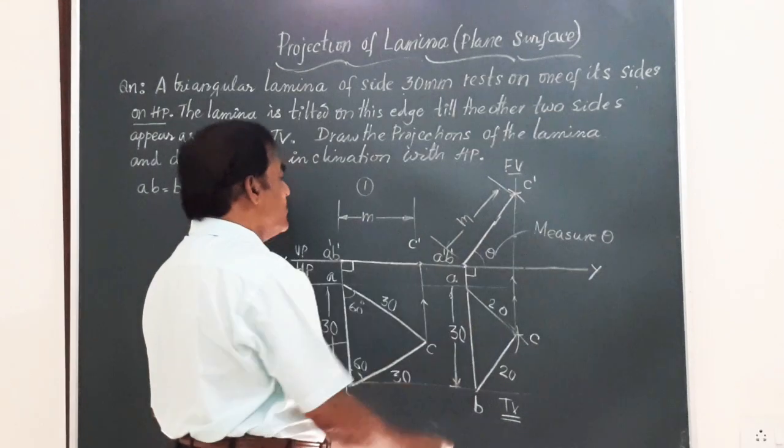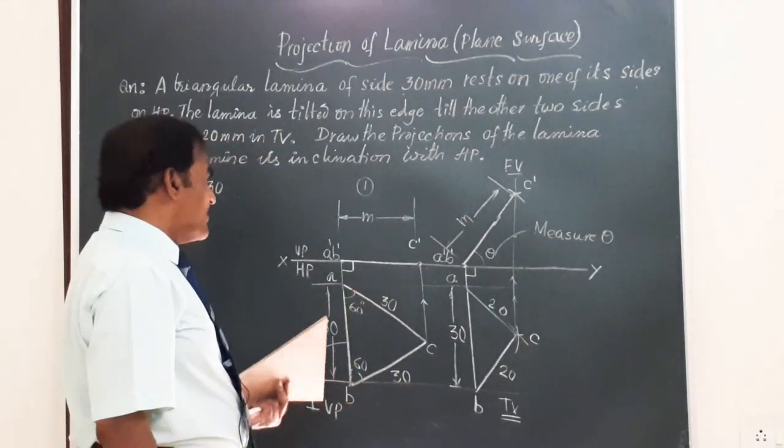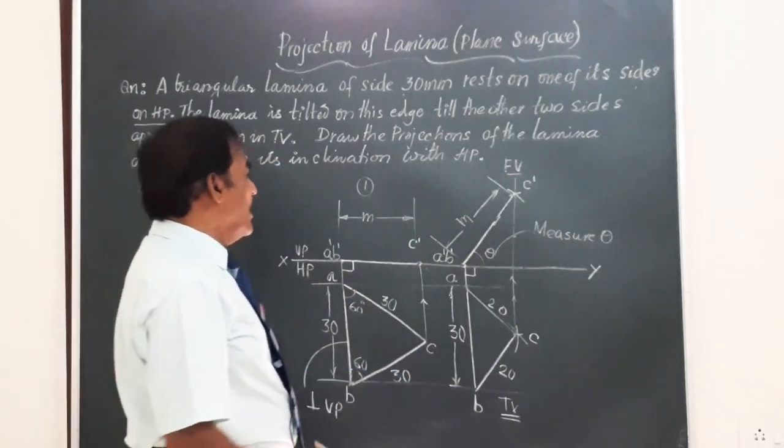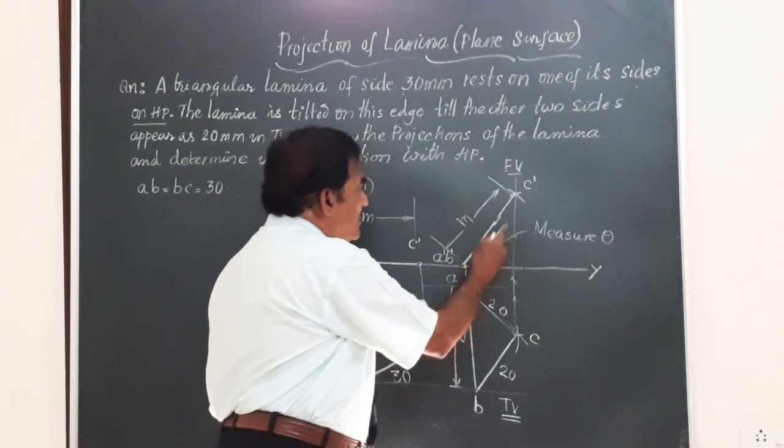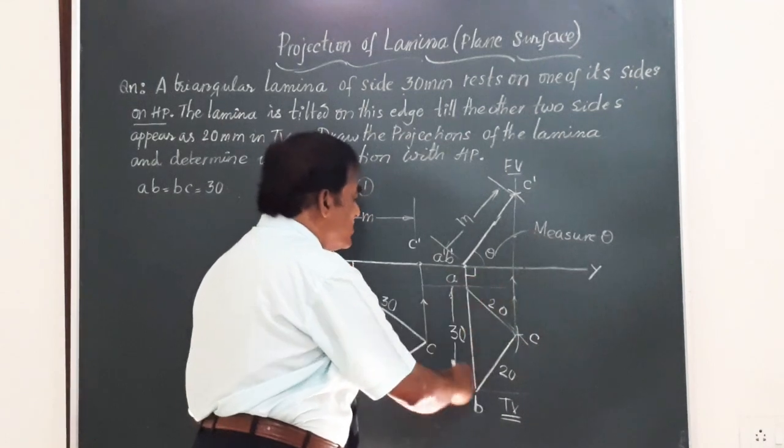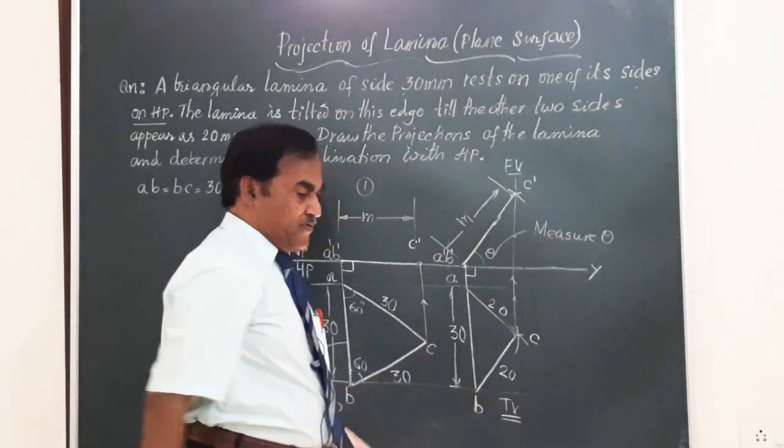So, this will give you the complete projections of the lamina resting on one of its sides AB, surface making an angle theta such that it is appearing as an isosceles triangle in the top view.